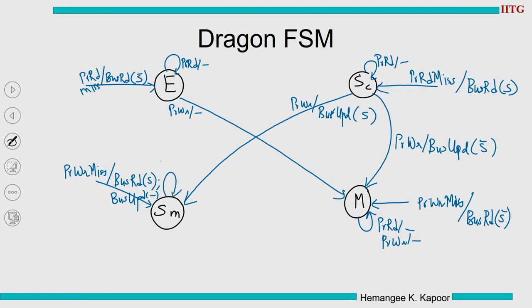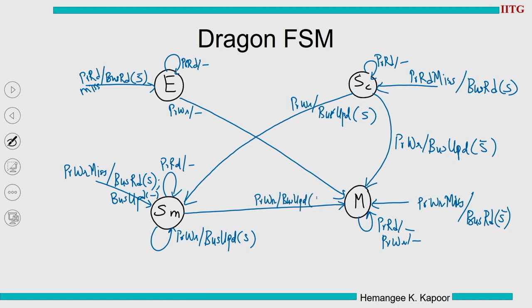In state SM: reads are a self-loop. On a write, if there are other sharers (S is true), remain in SM; if there are no other sharers (S̄), go to M. So: processor write in SM → send bus update; if S̄ go to M, if S stay in SM.